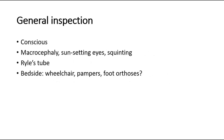In a short case, on general inspection, we look at the patient — the child — and we comment on their mental status, whether they are alert and conscious. Look at the head circumference, and we expect to see macrocephaly. They might have sun-setting eyes and also squinting of the eyes. Look for a nasogastric tube to help in their feeding.